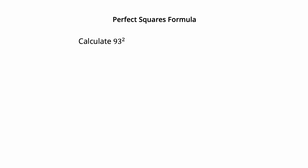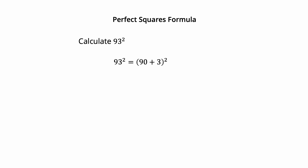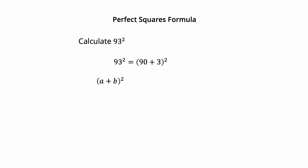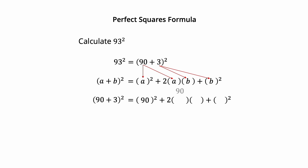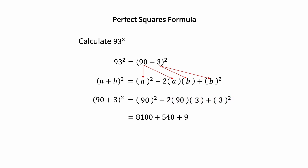Next, calculate 93 squared. Write 93 squared as the square of 90 plus 3, since 90 plus 3 equals 93. Using the formula (a plus b) squared equals a squared plus 2ab plus b squared, with 90 as a and 3 as b: 90 squared is 8,100. 2 times 90 times 3 equals 540. And 3 squared is 9. The calculated result is 8,649.